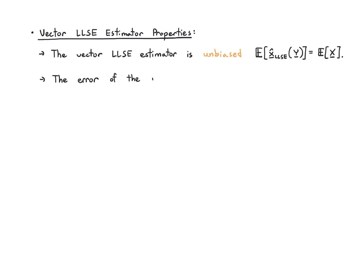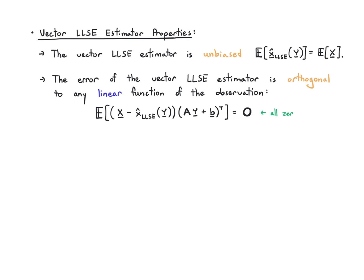I'll quickly say the properties. These are not the most important things for us in this class, but you might use them in later classes. The vector LLSE estimator is unbiased - if you average it, you will get the average of the thing you were looking for, the mean vector of x. Its error is orthogonal to any linear function of the observation. That means if I take the error vector - the true x minus the predicted x - and try that against Ay plus b for any A and b, I'll just get zero, or really a zeros matrix, because everything here is a vector.